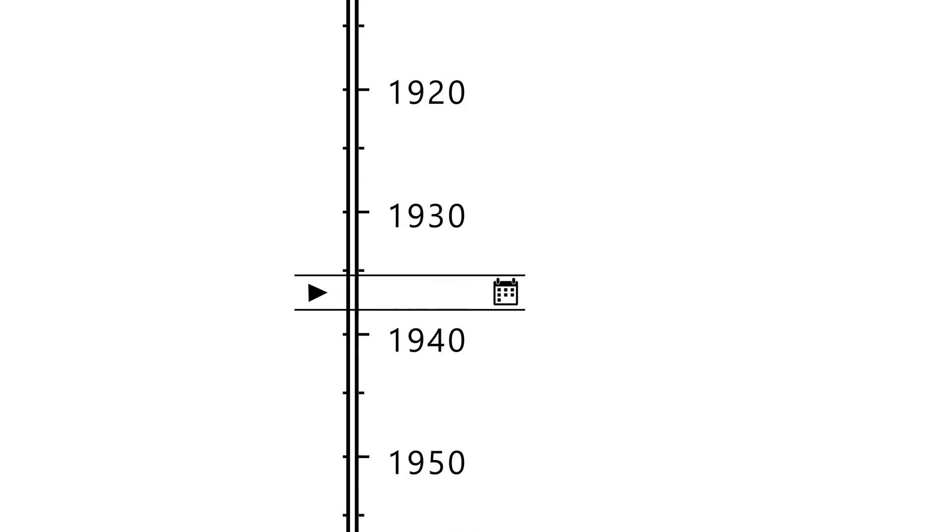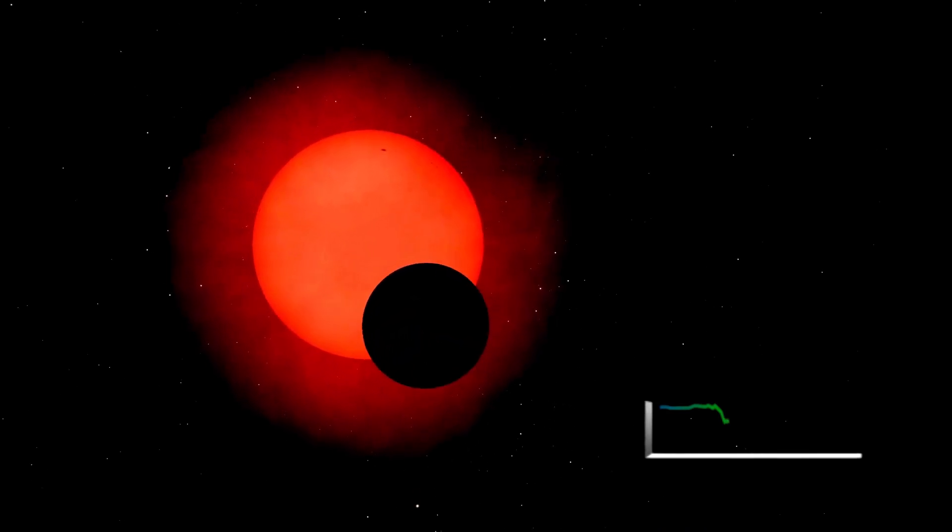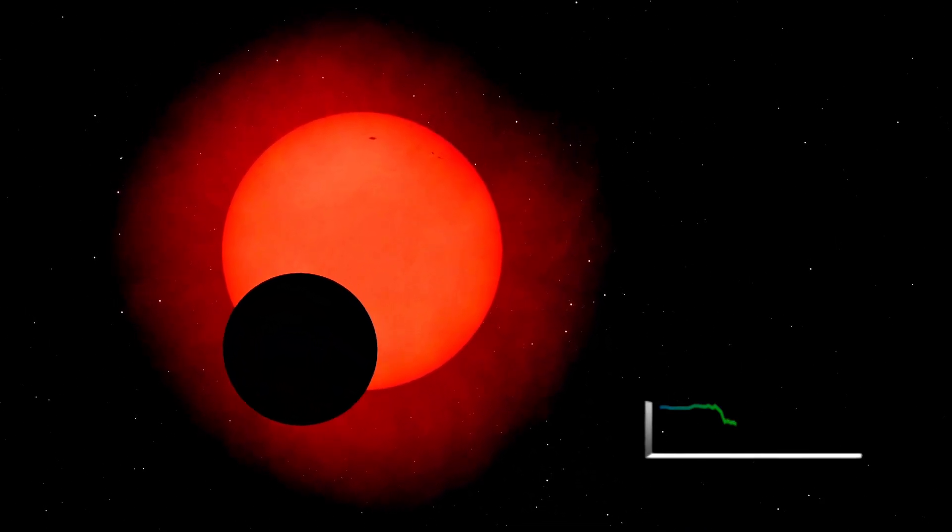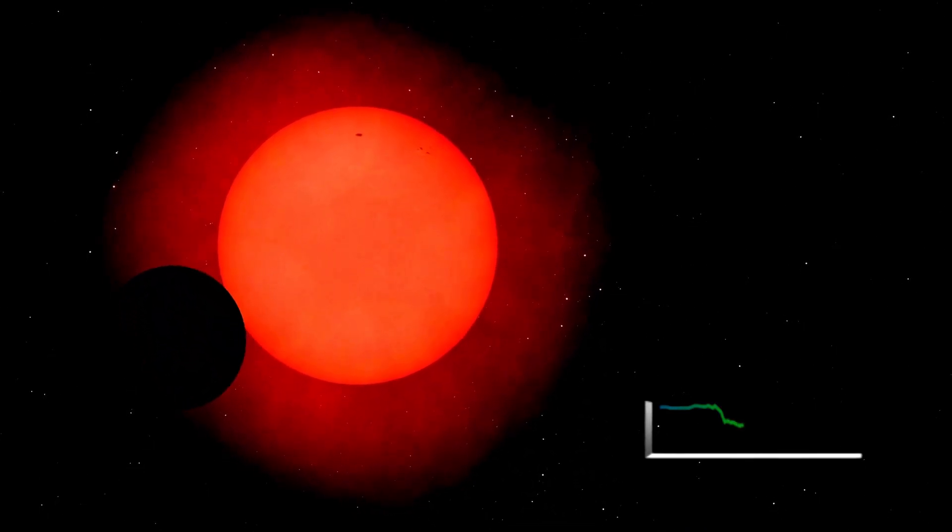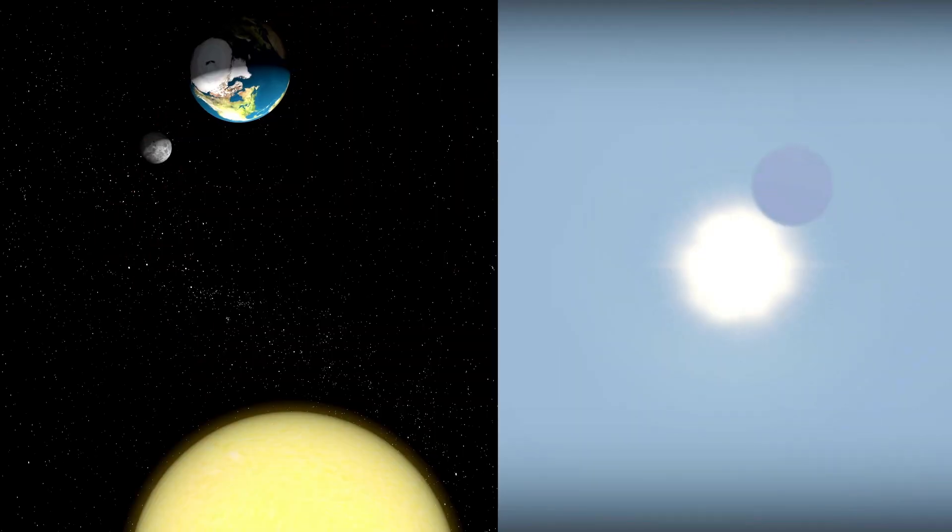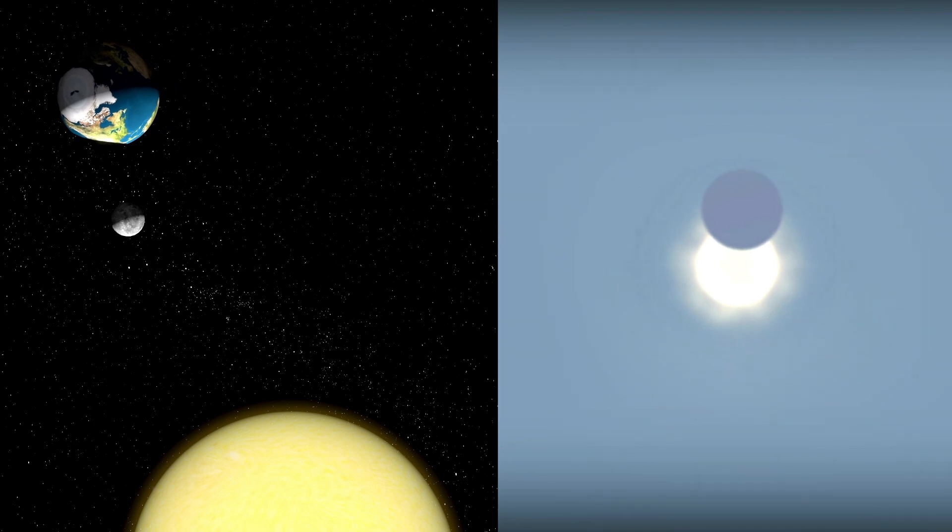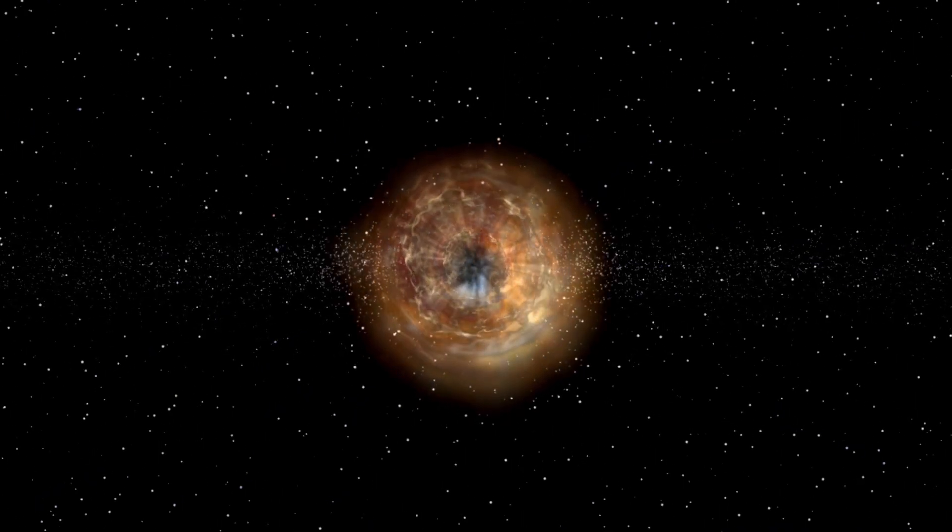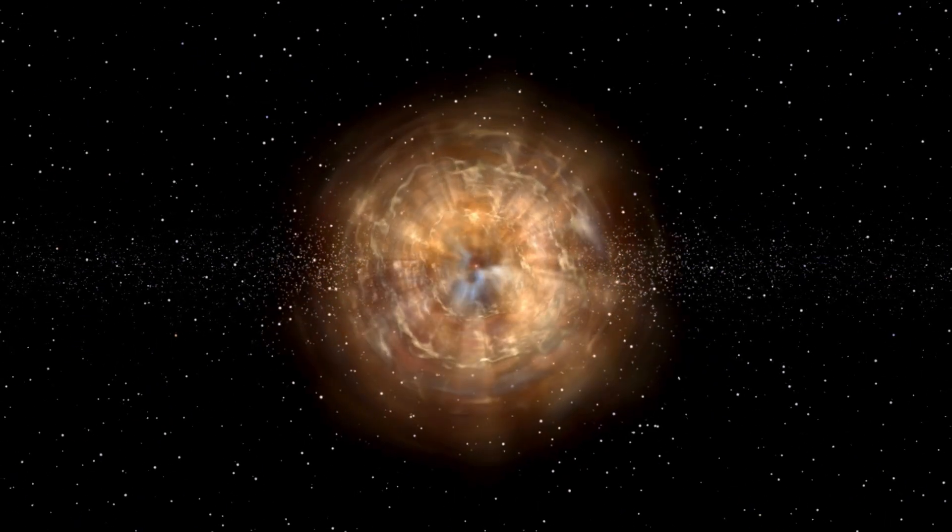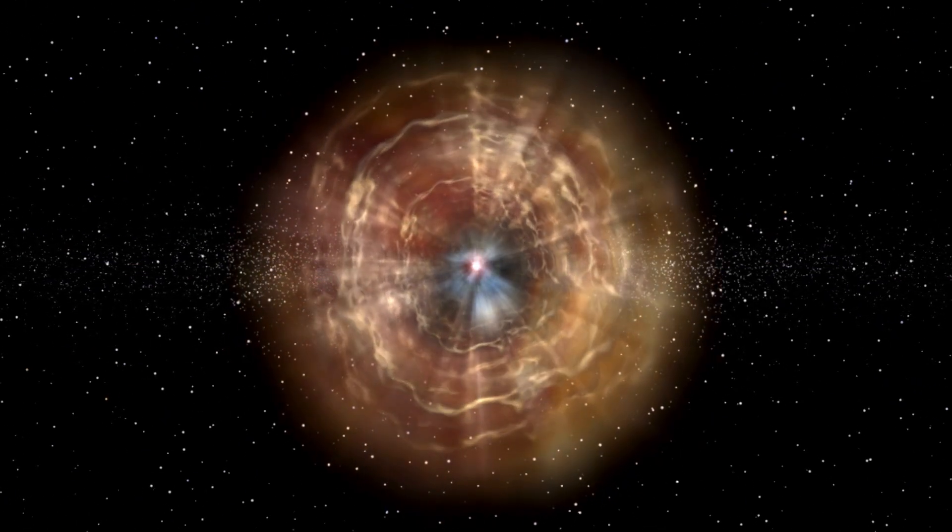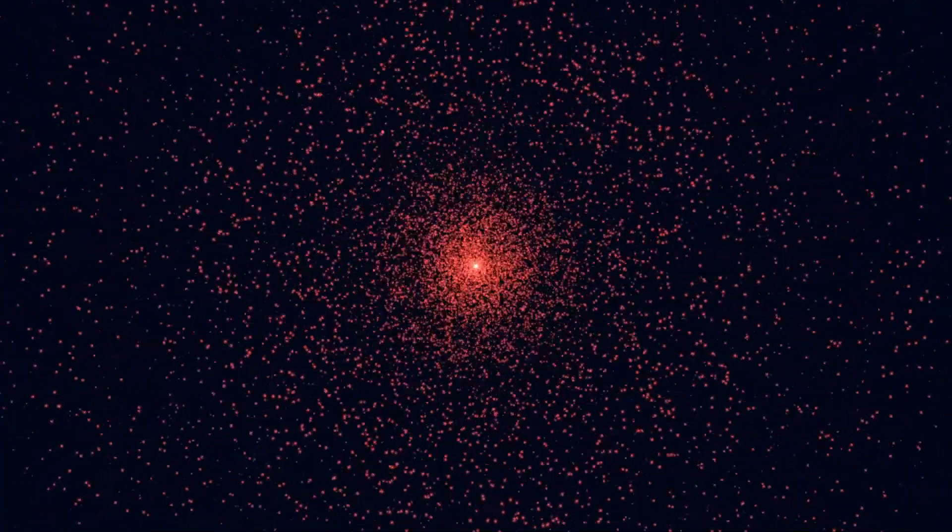When pointed at Betelgeuse, Webb stripped away the shroud and exposed something no one expected. Surrounding the star was a massive, cold shell of gas and debris, larger, denser, and more complex than anything previously observed. Filaments stretched across space like ghostly fingers. Arcs of cooled plasma curved outward like ripples frozen in time. What scientists once assumed was a simple decaying outer layer turned out to be a dynamic, tangled battlefield of forces.